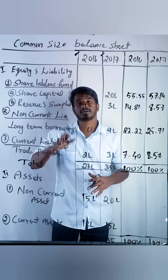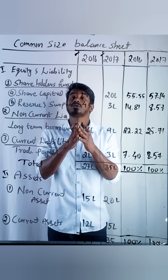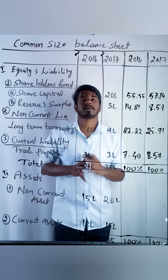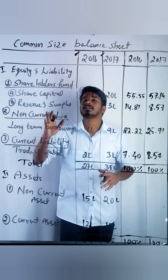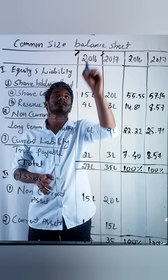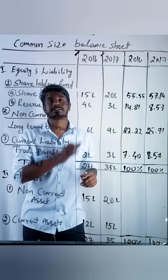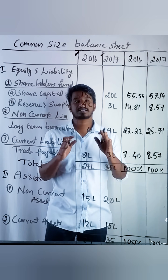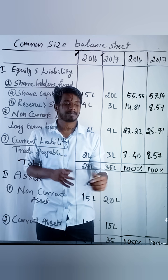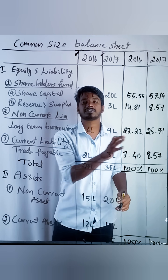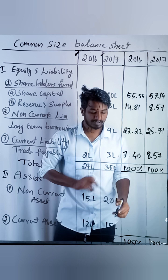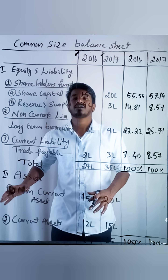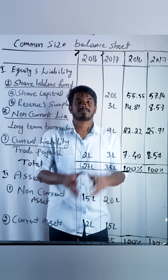Hello everyone. In this video we will learn to prepare a common size balance sheet. In the given question we have been given two years' data: 2016 and 2017. Just write 100 percent in total liabilities and 100 percent in total assets.